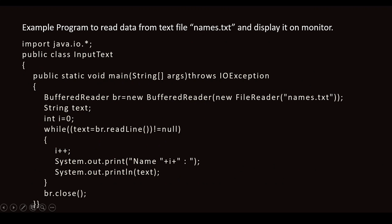Now you can see an example program. The first line is import java.io.*, which includes the java.io package and all files under it. Then you have a class named InputText with a public static void main. You must include throws IOException in the method signature, because there may be a possibility of an input-output exception, which will be caught and thrown to the compiler to handle. The first line in main is: BufferedReader br = new BufferedReader(new FileReader("names.txt")).